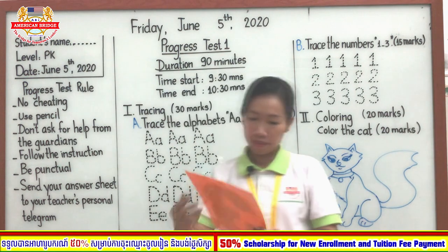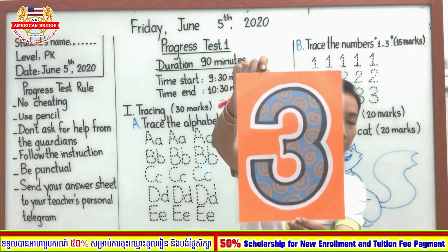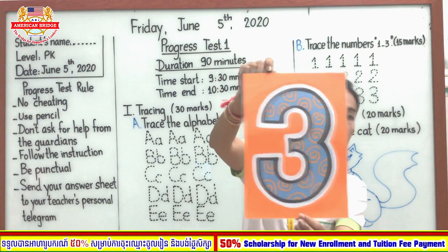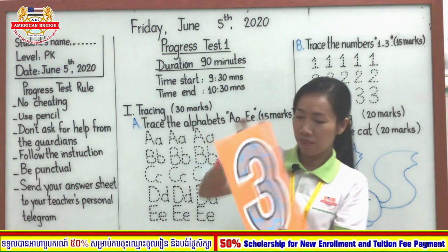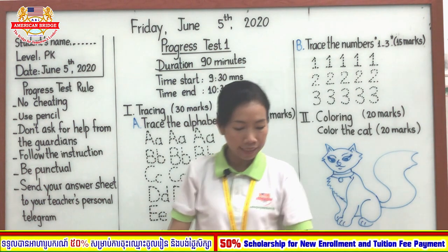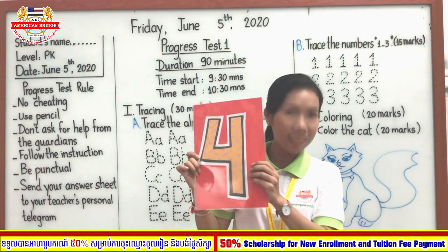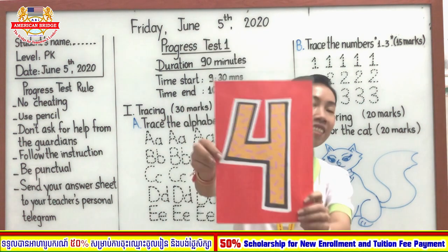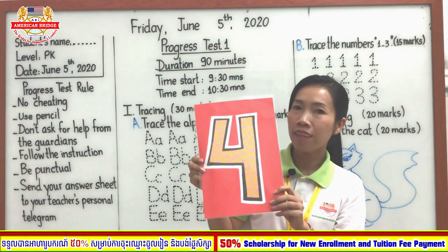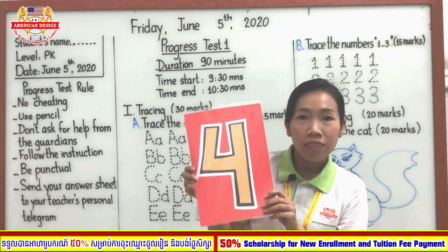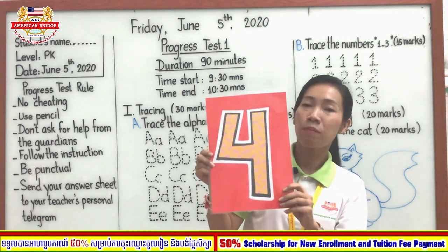Here — who can tell teacher what number? Yes, number 3. Show me 3 fingers. Good. And the last one is? Yes, number 4 — that you just studied already on Wednesday and Thursday. You studied number 4 already.